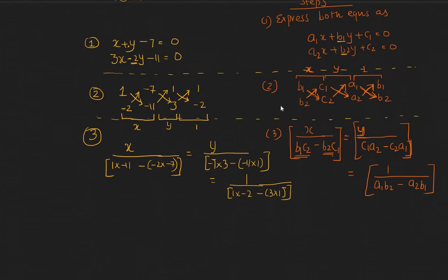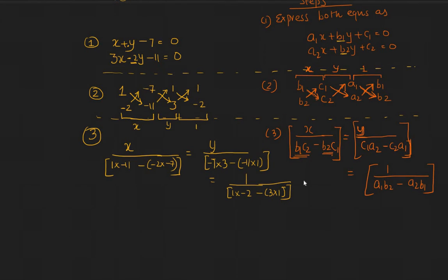Then we can actually try to find out what the values are. So next step is minus 11, minus 2 into minus 7 would be plus 14. So minus 14, equal to y by minus 21, minus, minus 11 into 1 is minus 11.